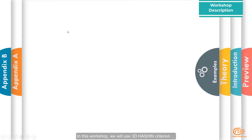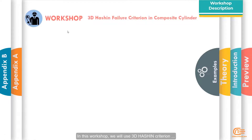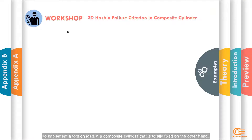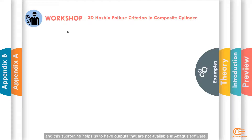In this workshop, we will use the 3D Hashin criterion to implement a torsion load in a composite cylinder that is totally fixed on the other hand. Note that there is no 3D Hashin failure criterion in Abaqus software for 3D elements, and this subroutine helps us to have outputs that are not available in Abaqus software.